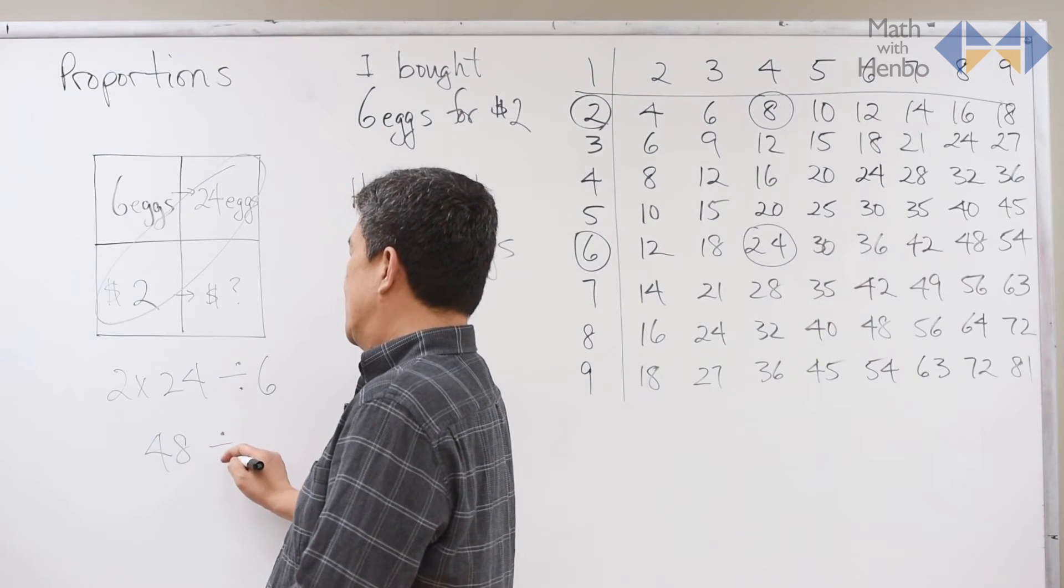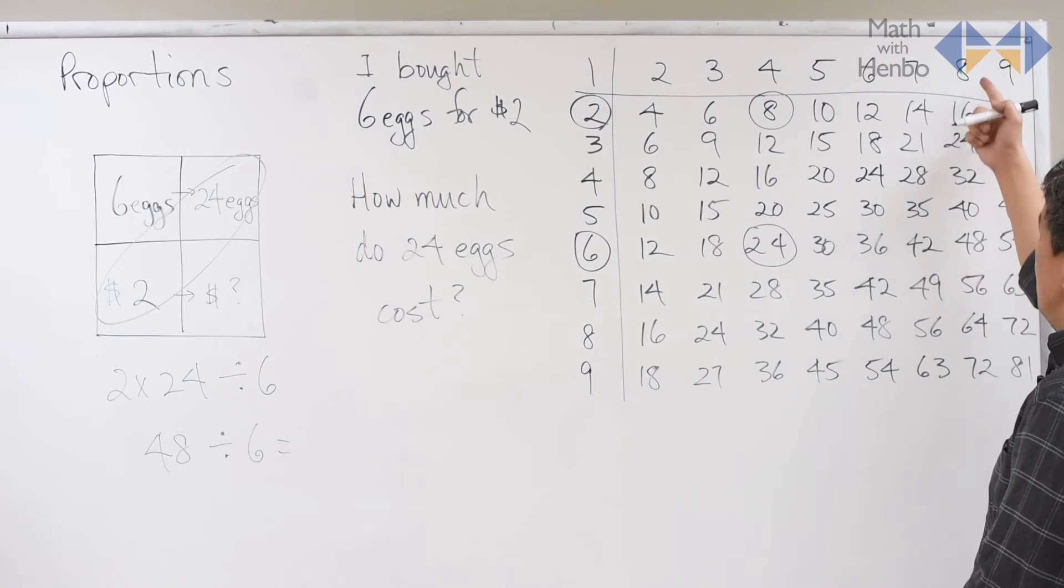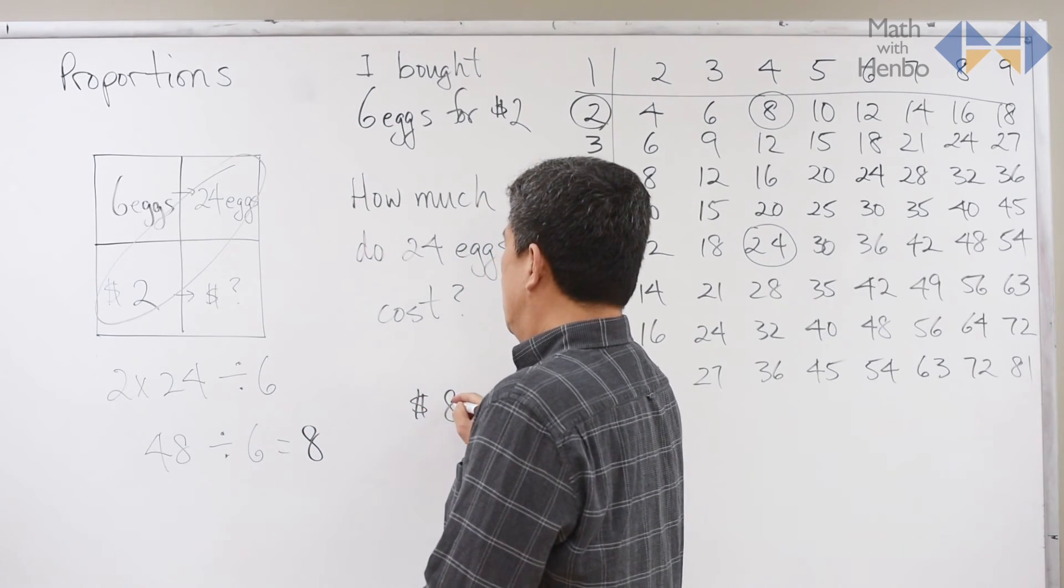So here, 6 goes into 48, and the answer here is 8. So the final answer here is $8.